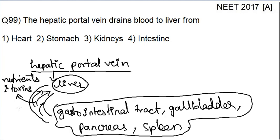There may be some toxins and some waste material present in the food as well. All these will get into the blood which the hepatic portal vein carries from all these parts to the liver. By looking at this information, you can easily eliminate the heart and you can easily eliminate the kidney, because these two are not part of our digestive system. But stomach and intestine both are part of our digestive system.